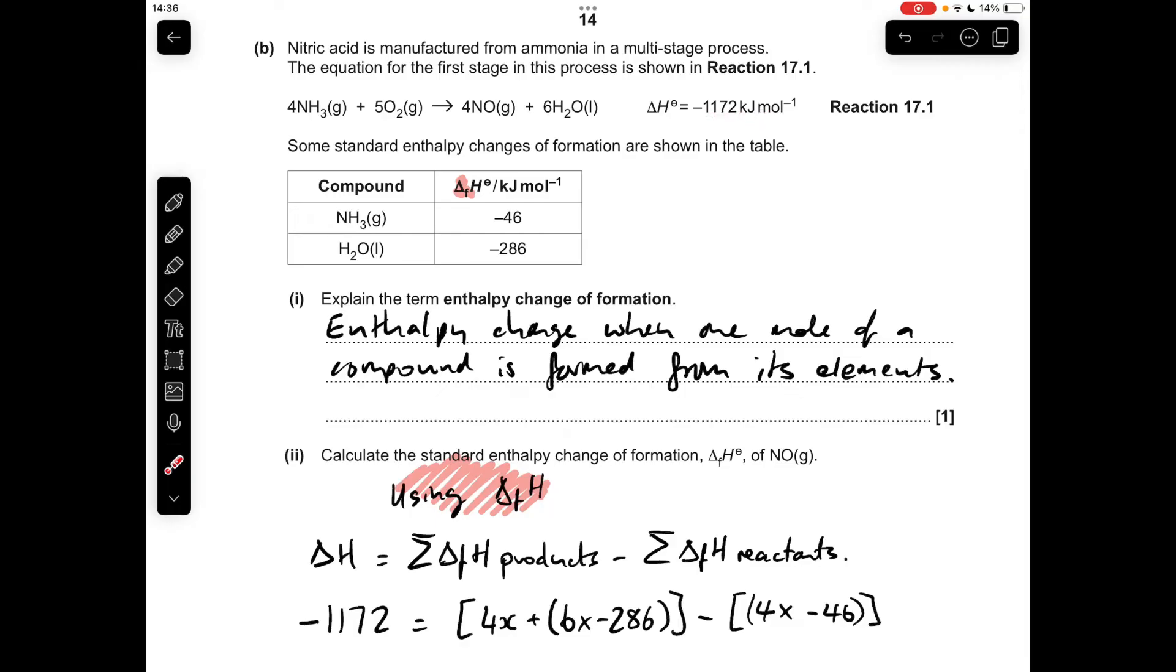Putting the numbers in, the ΔH for the reaction is -1172, so the enthalpy change of formation of the product, so there's that unknown one we've got to calculate, so four times that, I'll just call it X, plus the 6 H₂O enthalpy change of formation.